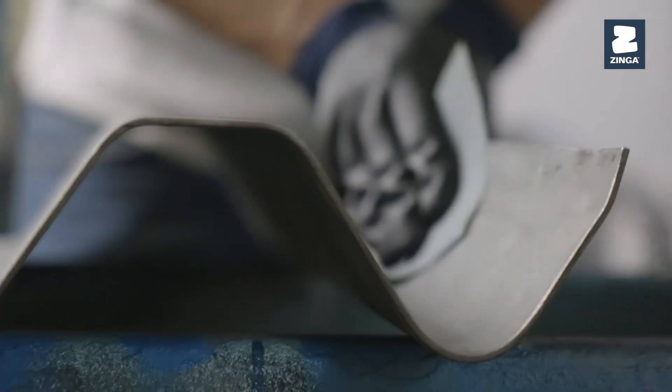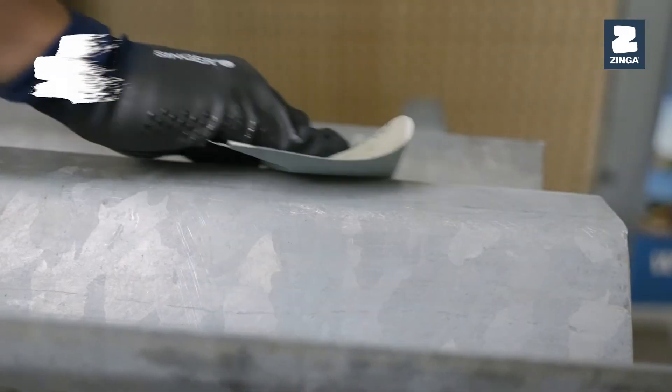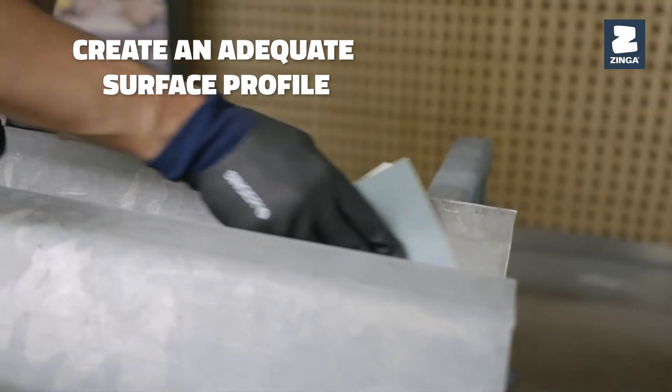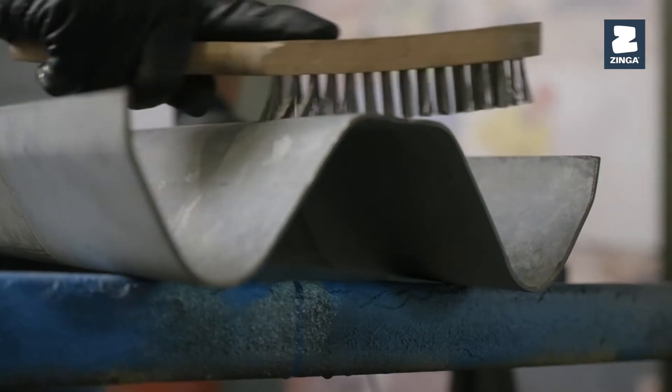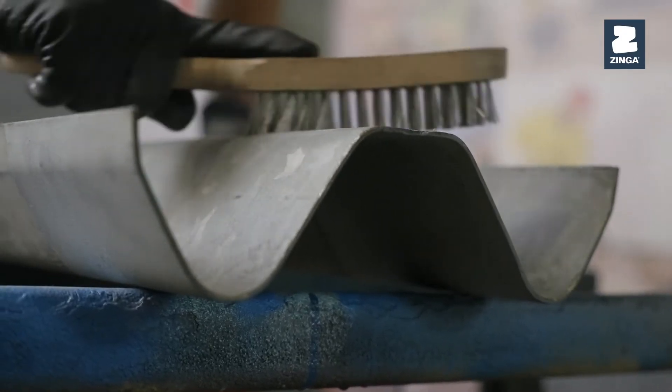For touch-up and repair of newly galvanized structures, an adequate surface profile should be created. You can slightly roughen the surface using sweep blasting, power tools, or manual tools.